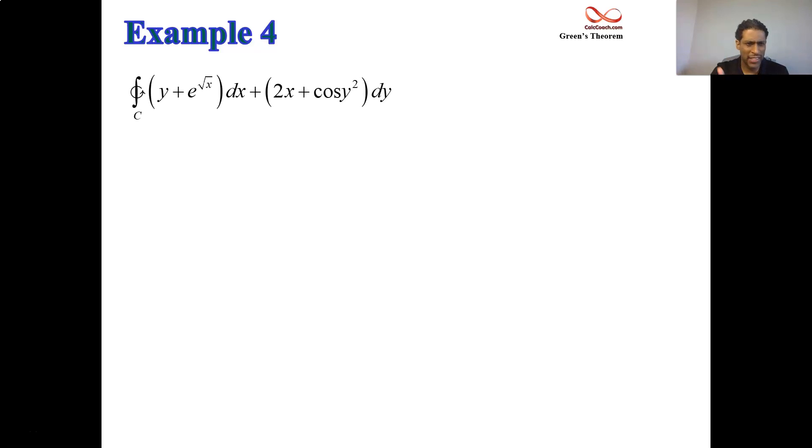We have y plus e to the root x as the p, 2x plus cosine of y squared, that's the q, and our region is the region that's in between two curves. We have the parabola y equals x squared and the root function y equals root x. We're going to start at the origin and basically make our way back to the origin. The curve is closed.